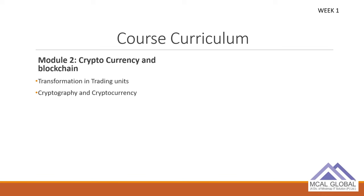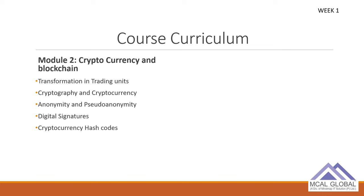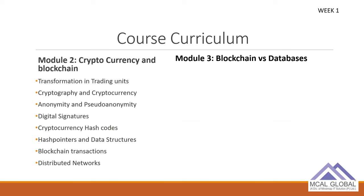We'll cover cryptography and digital currency, which is what powers the blockchain, as well as anonymity. We'll look at digital signatures, hash codes — what they are, why they're important, and how they're calculated. Then we'll see hash pointers and data structures — how blocks are hashed and how they grow into a tree. We'll also cover blockchain transactions and distributed networks.